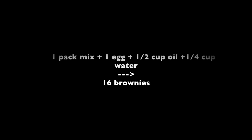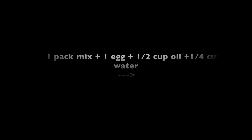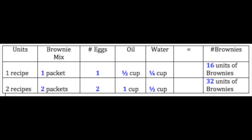Let's change it up. What if you wanted to bake twice as many brownies? Here's our original recipe. To bake twice as many brownies, you would also need to double all of your ingredients. Double the reactants gives you double the products.